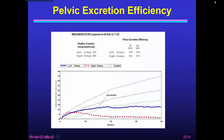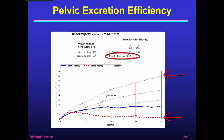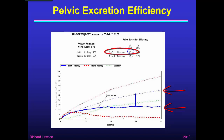Here's an example of pelvic excretion efficiency. The plot shows the renogram for the left kidney in blue, with a blue dotted extrapolation showing the uptake curve — the zero output curve — for the left kidney. In red we have the same thing for the right kidney. At 30 minutes, the uptake curve for the right kidney is here, but what's actually left in the kidney is here, so 95% of what was in the kidney has come out — that's pretty good. Whereas for the left kidney at 30 minutes, 49% has come out — that's its pelvic excretion efficiency, which is not nearly so good.